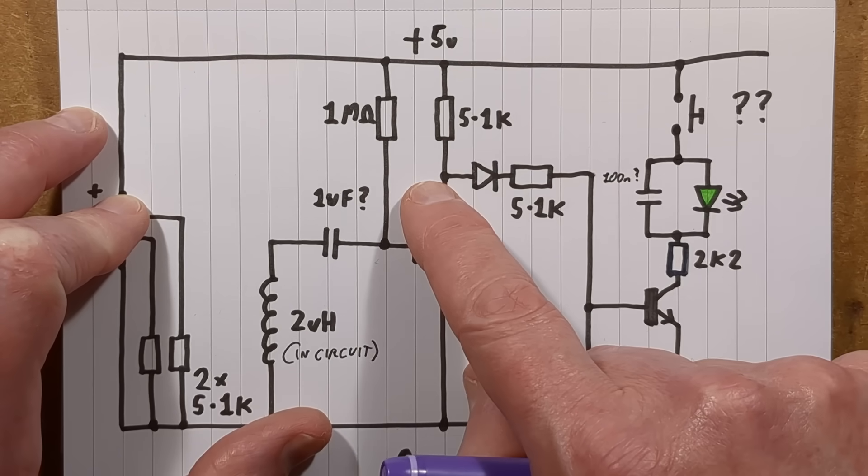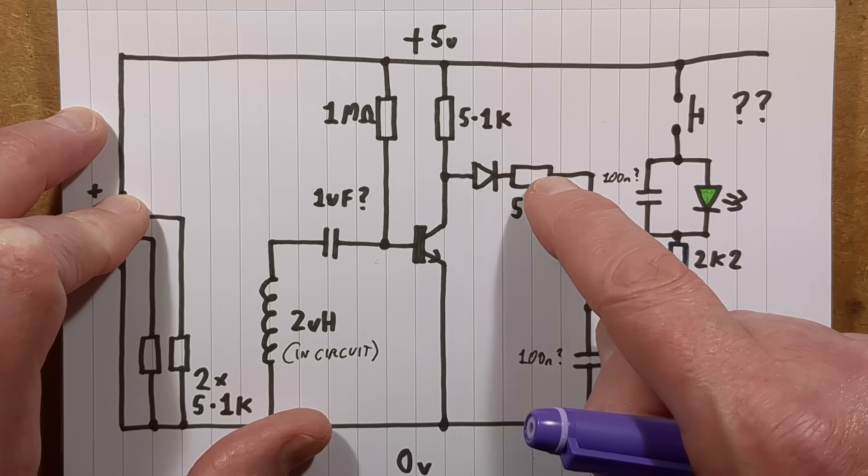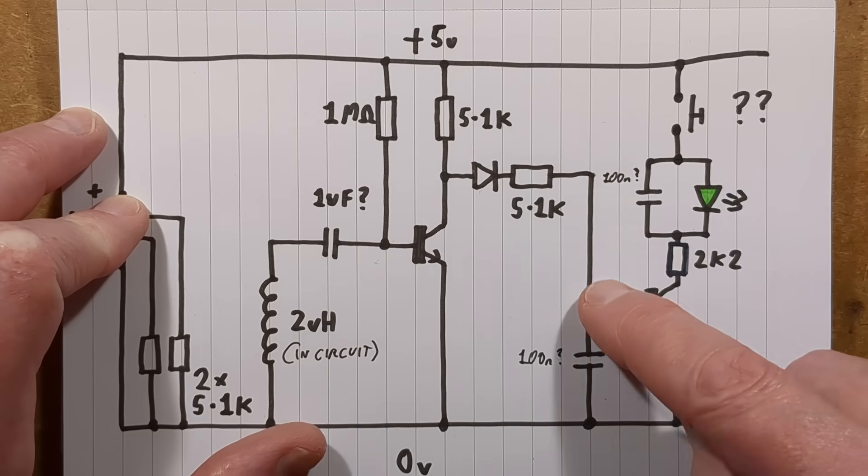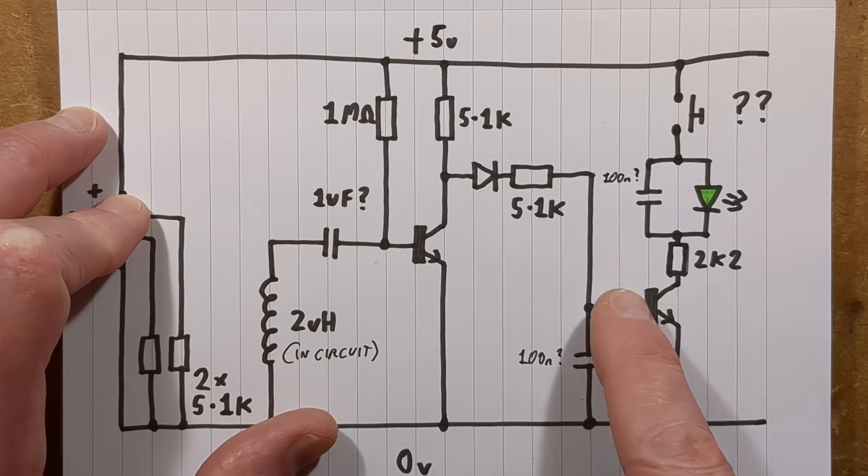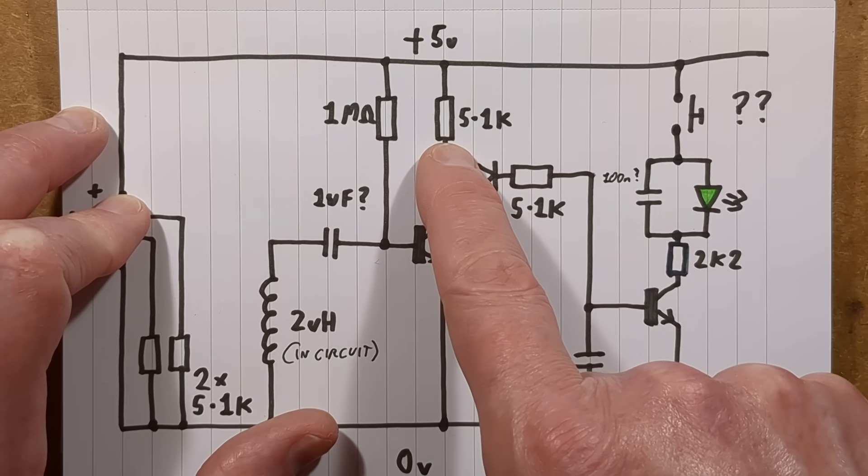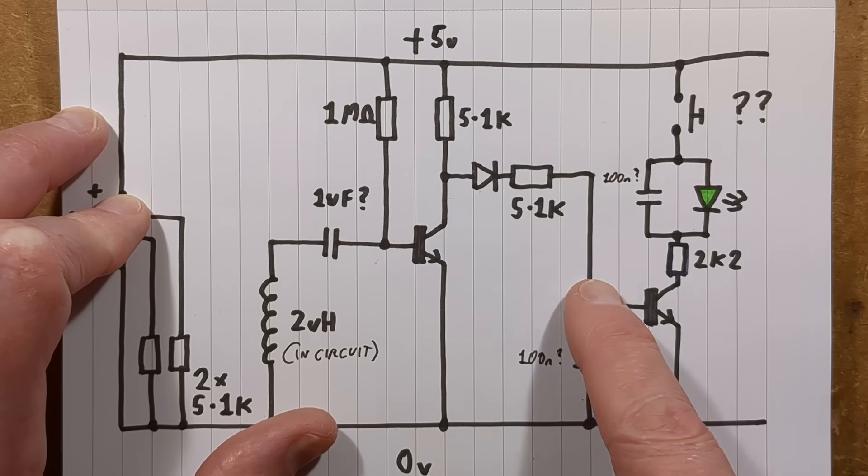And when it does turn off, current flows through this diode, through this seemingly utterly pointless resistor here, and charges this capacitor. Because keep in mind that the current path to charge that would normally be through this 5.1k, and then the diode, and over to that.